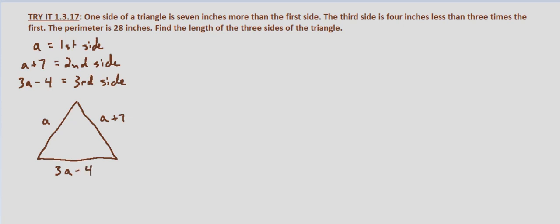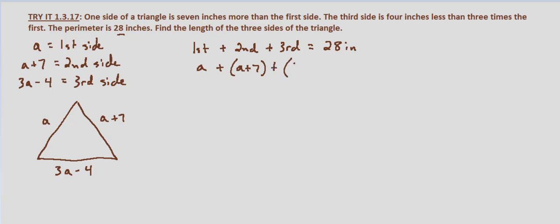We are also given that the perimeter is 28 inches. The length of the first side plus the length of the second side plus the length of the third side equals 28 inches. So we substitute what we have: the first side is A, the second side is A plus seven — notice I'm wrapping my substitutions in parentheses to make sure I don't make any mistakes — and then plus three A minus four, and that still equals 28.